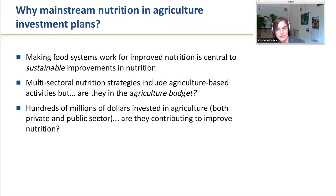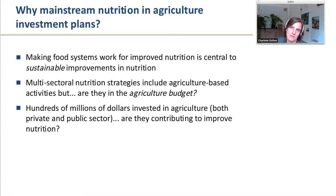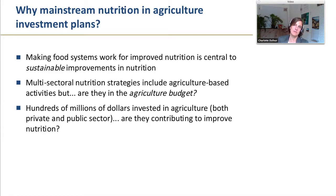At a practical level, many countries have multisectoral nutrition strategies with agricultural activities. But if you look at the sectoral budget — and most governments do plan sectorally — these nutrition activities are not necessarily captured in the agricultural side. If they're not, they might be in the multisectoral nutrition strategy but they're not going to be implemented. Finally, there are hundreds of millions if not billions of dollars invested in agriculture. How can we leverage those to improve nutrition? In some cases, agricultural investments might even be leading to harmful evolutions in terms of diets and ecosystems.